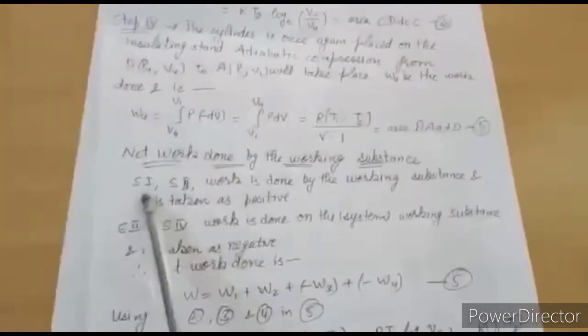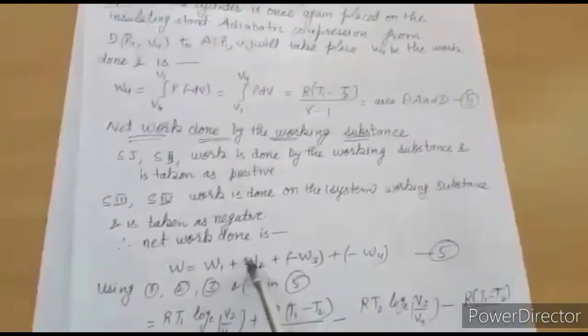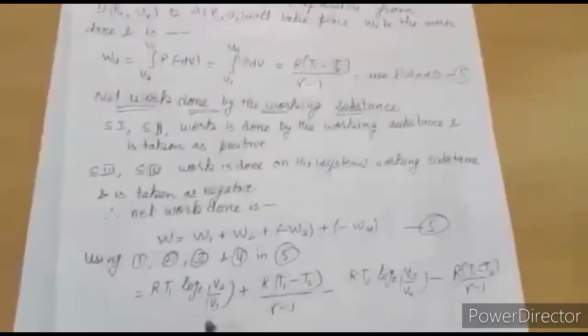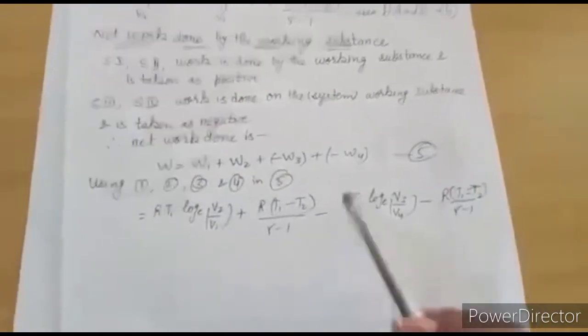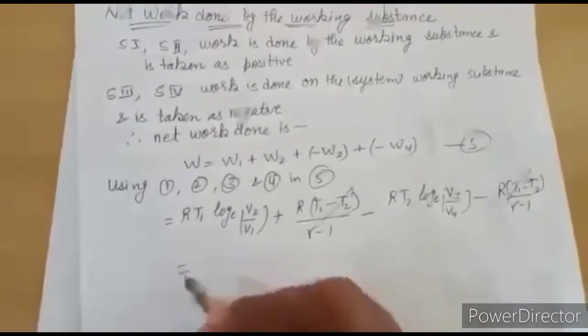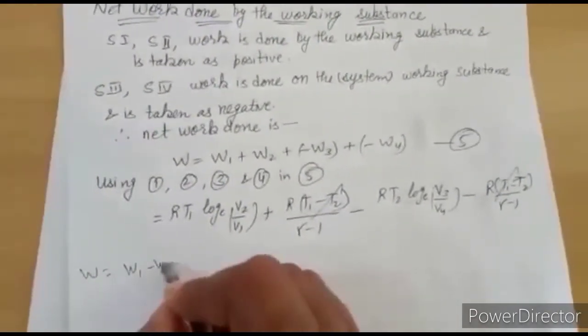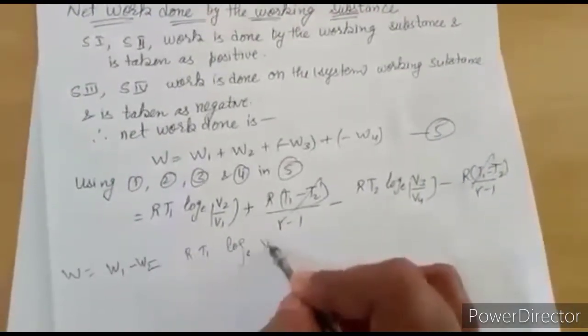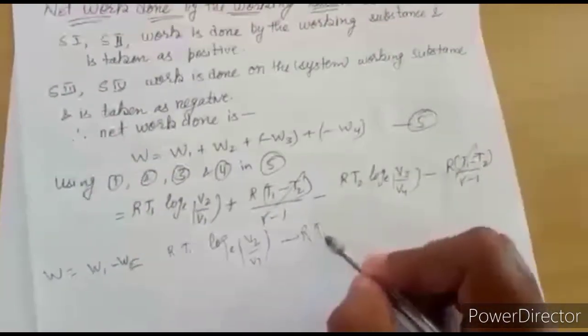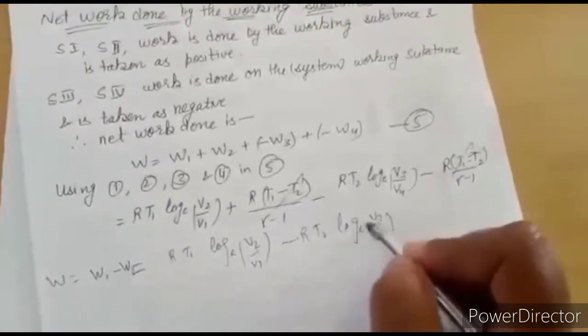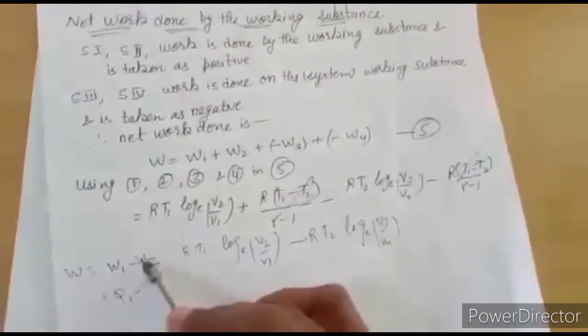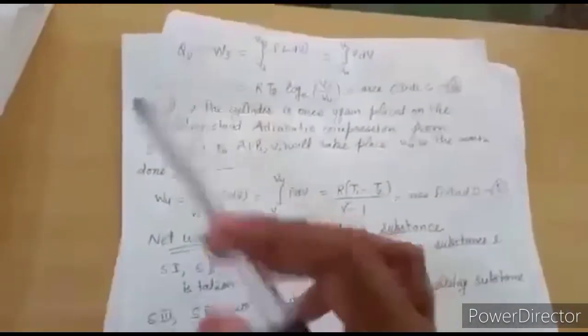The net work done is W = W1 + W2 − W3 − W4. Substituting values from equations 1 through 4, the adiabatic terms cancel out, leaving W = W1 − W3 = RT1 log(V2/V1) − RT2 log(V3/V4). Since W1 = Q1 and W3 = Q2, in the third step heat is rejected to the sink, and no heat transfer occurs in steps 2 and 4.